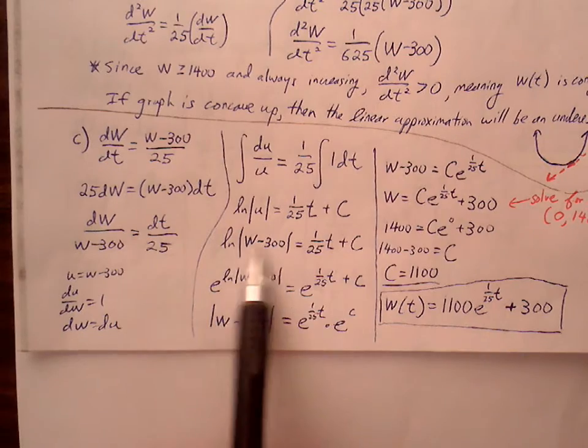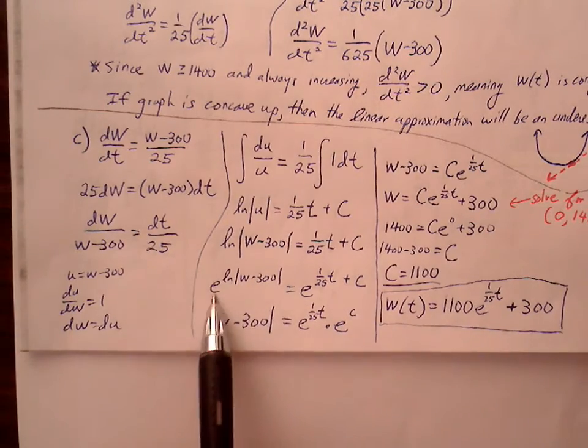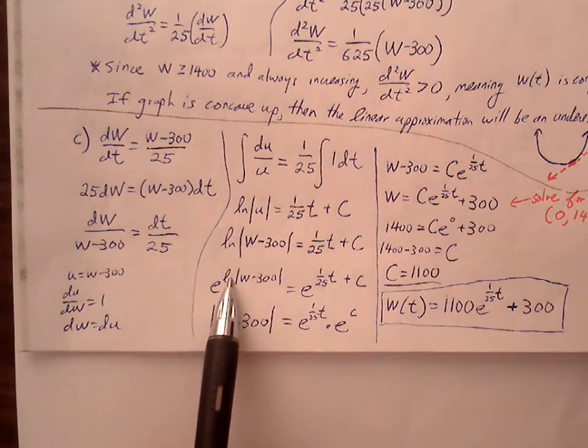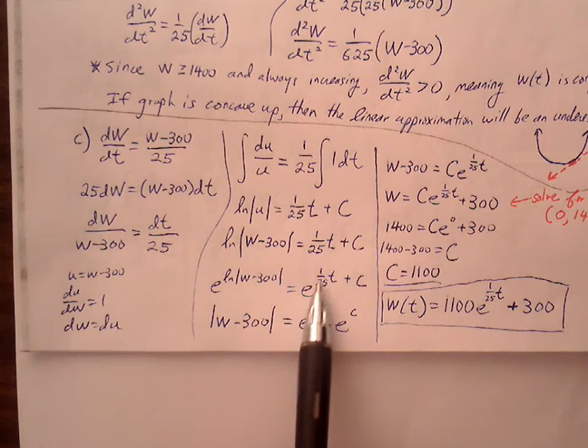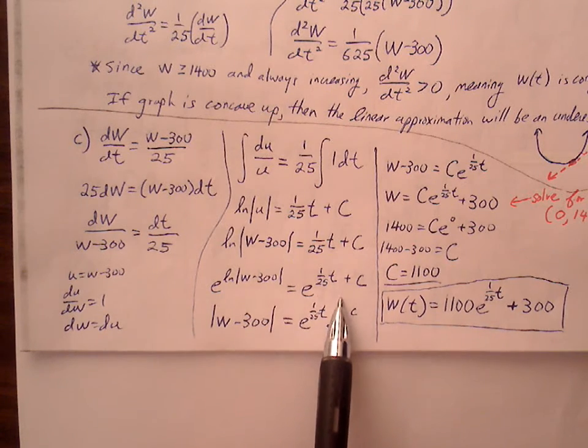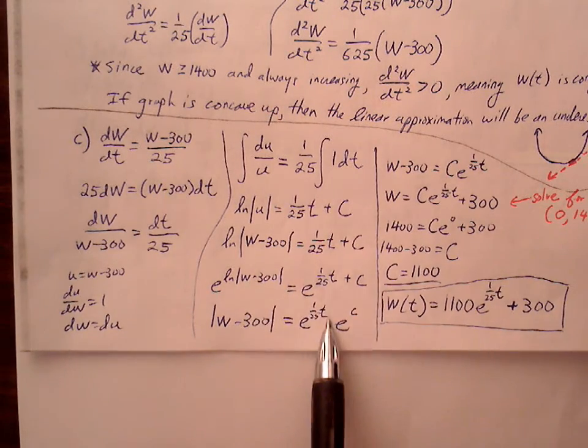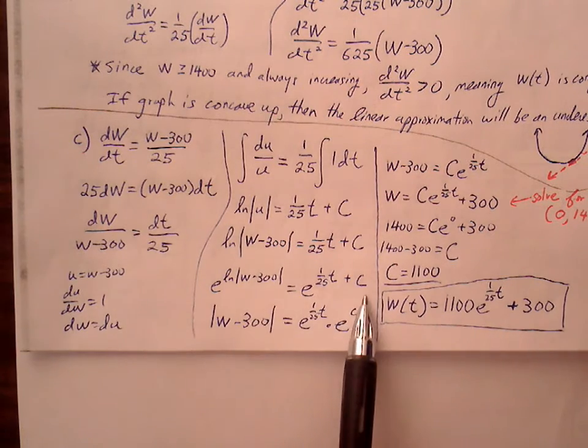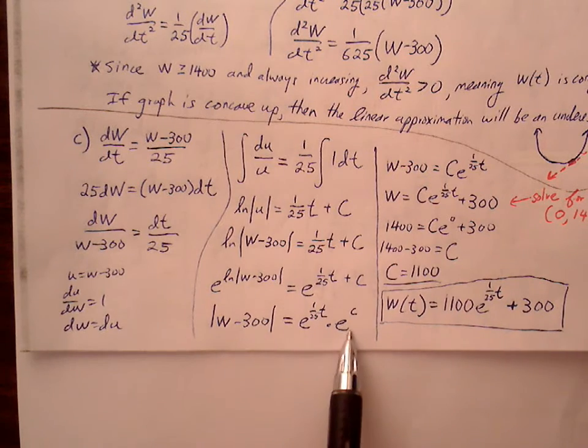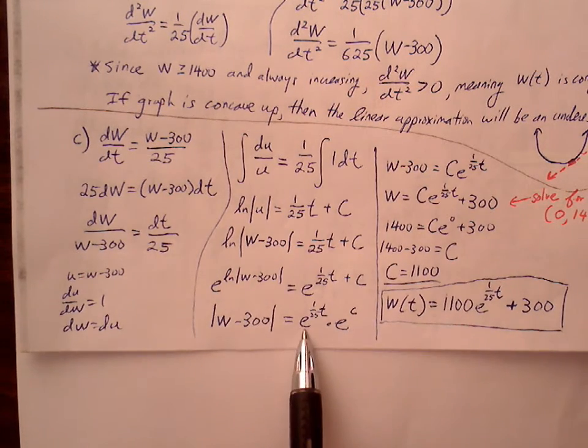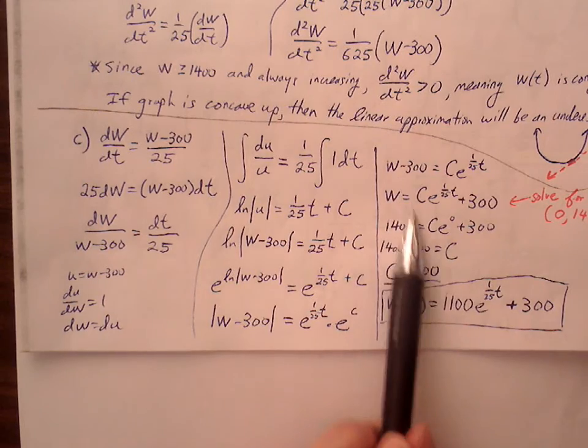Now I have my general equation. I'm going to go ahead and try to solve for W. Get that natural log out of the way by raising both sides with base e. That will take out that natural log on the left side. We're left with absolute value of W - 300. The right side becomes e^(1/25 t). Now this plus C, if I bring that down, it's going to become a multiplication because e^(a+b) is equal to e^a times e^b. The reason why we want to do that is we want to represent that C by bringing that down. e^C is going to be just a constant. We can think of it as a constant times this value with a variable in it. So push that C out in front. Now I have my general equation. I add 300 to both sides.